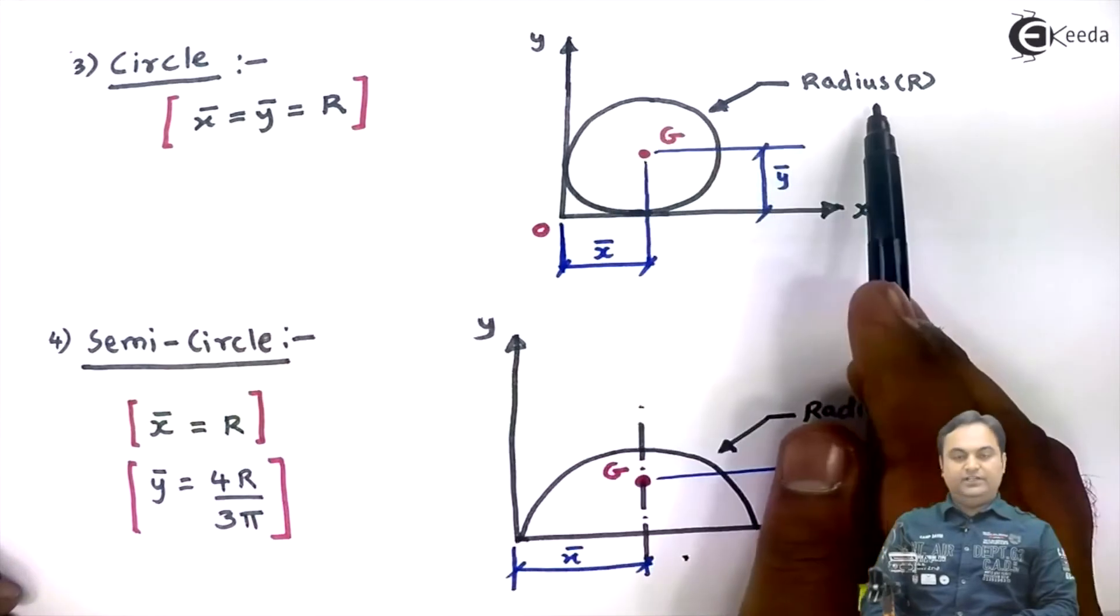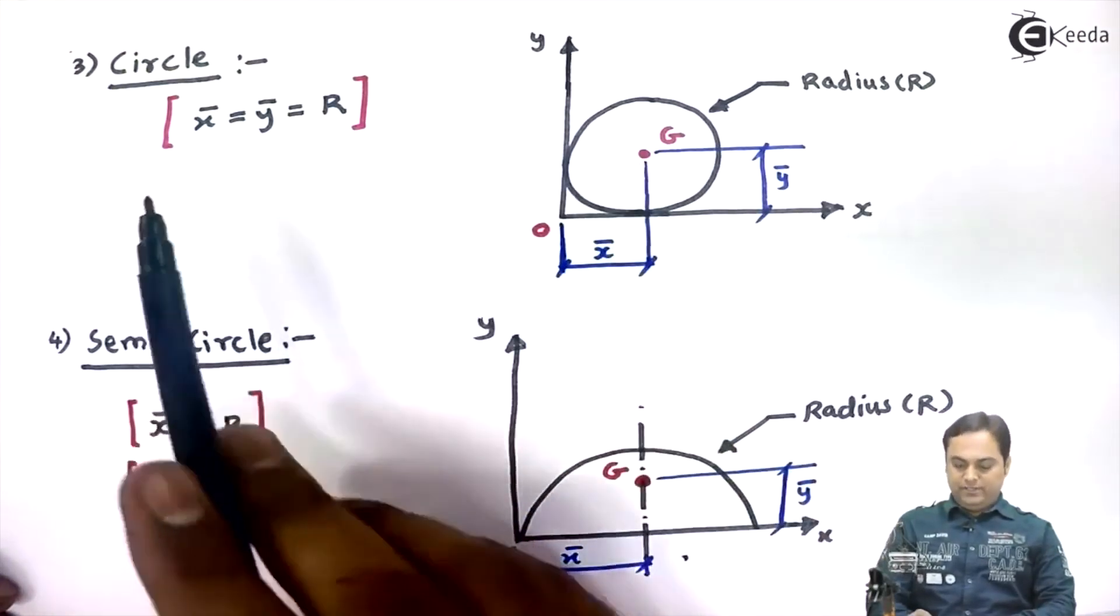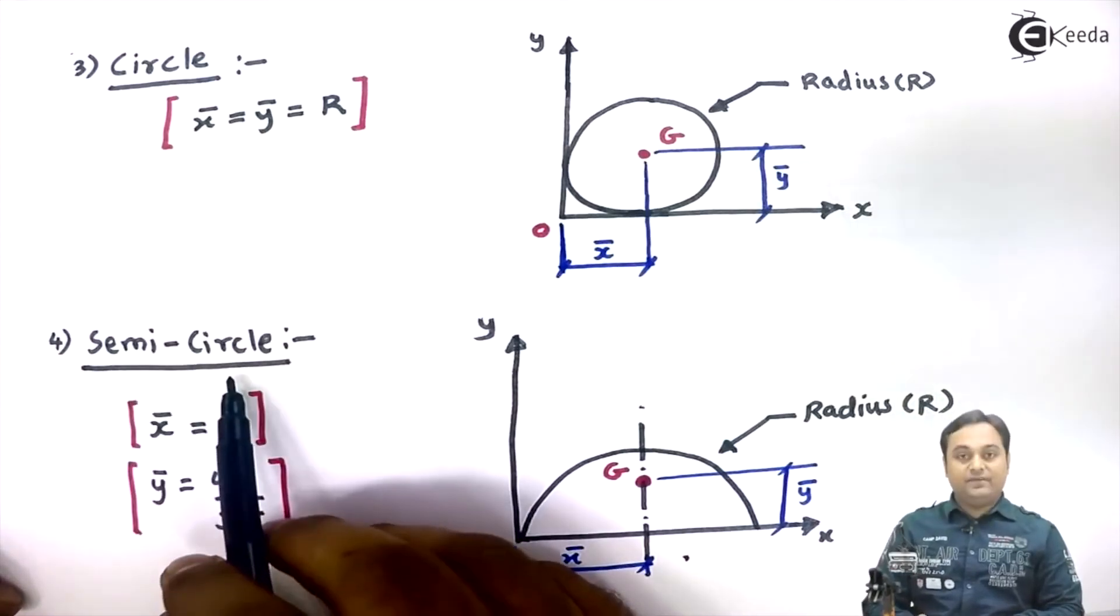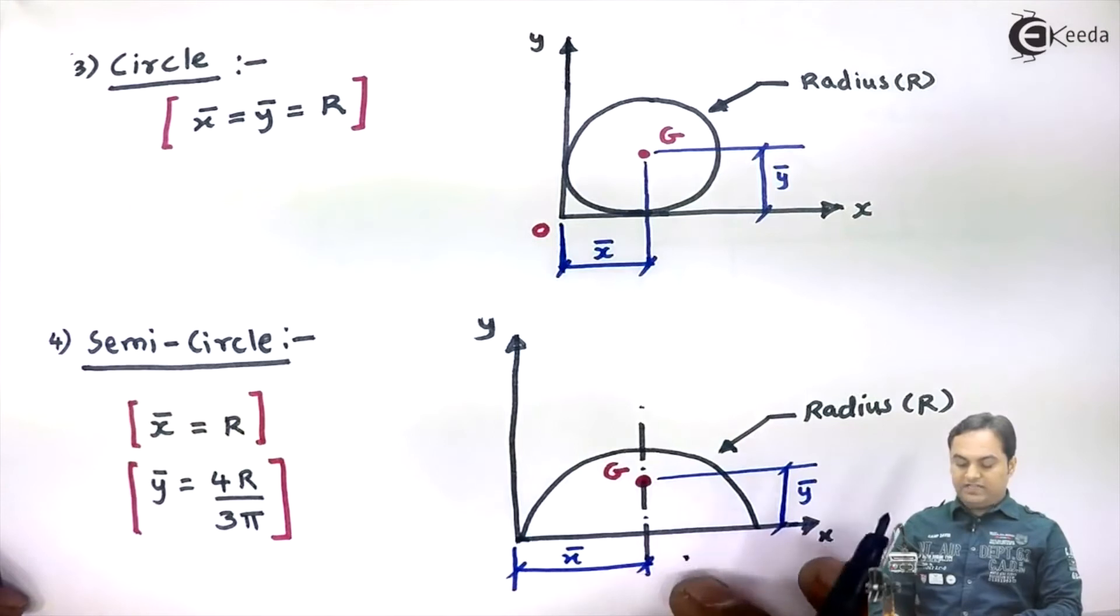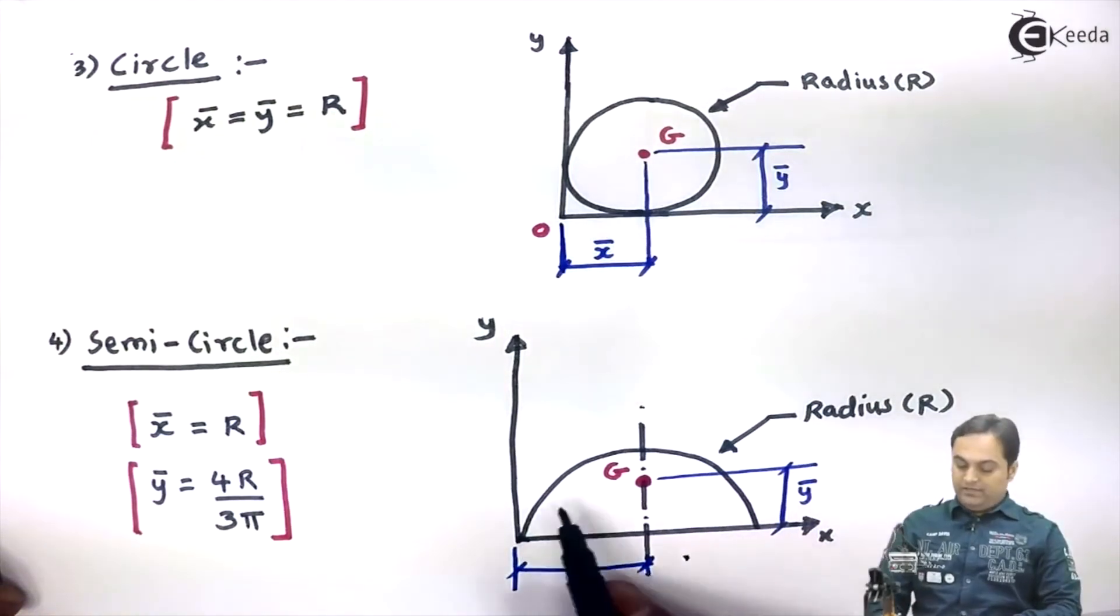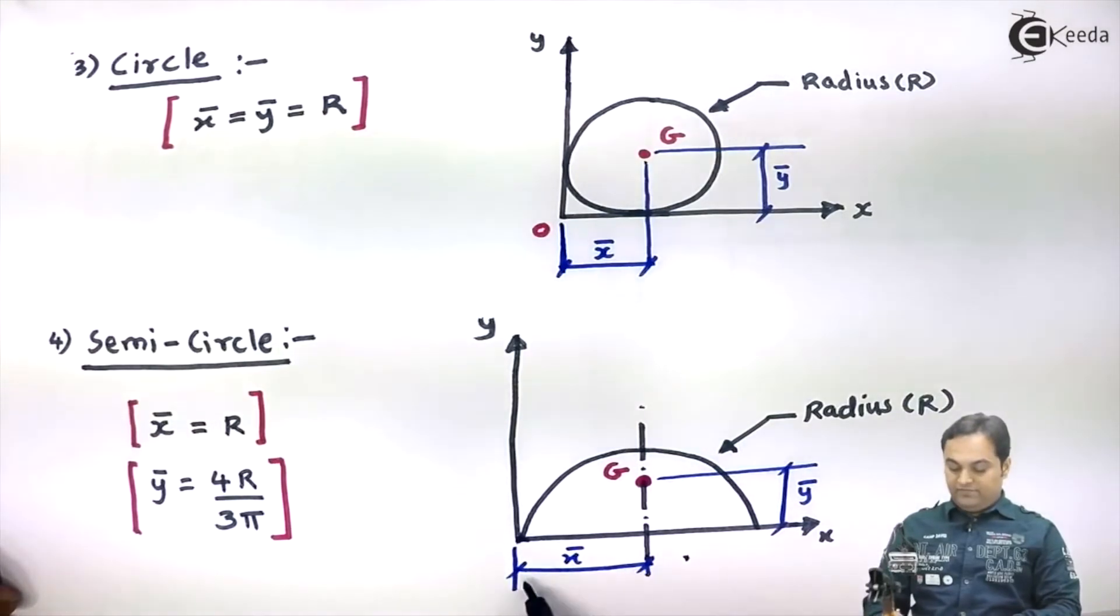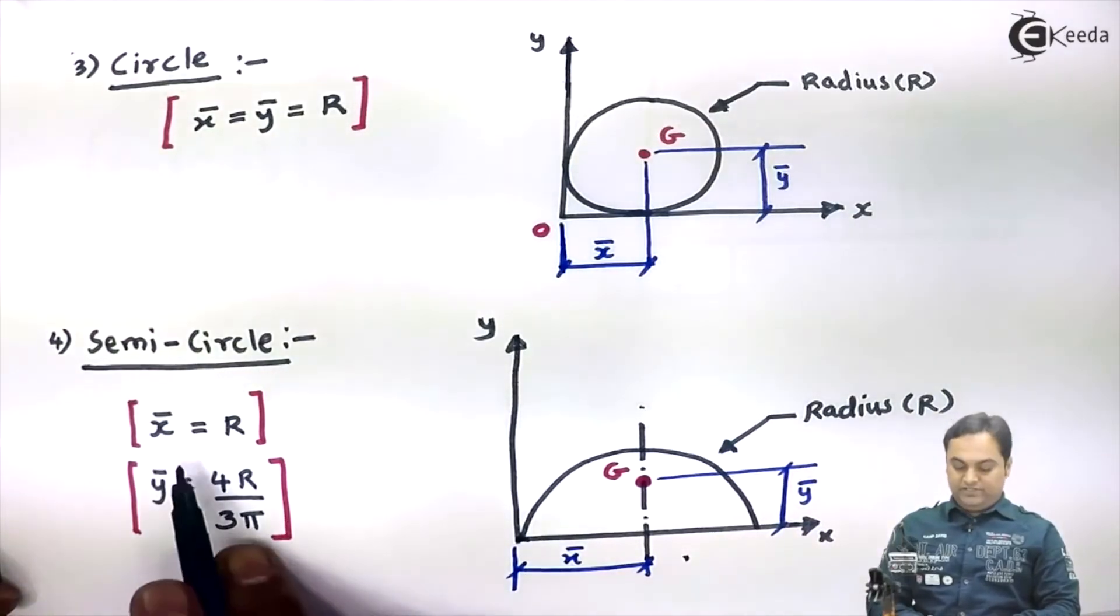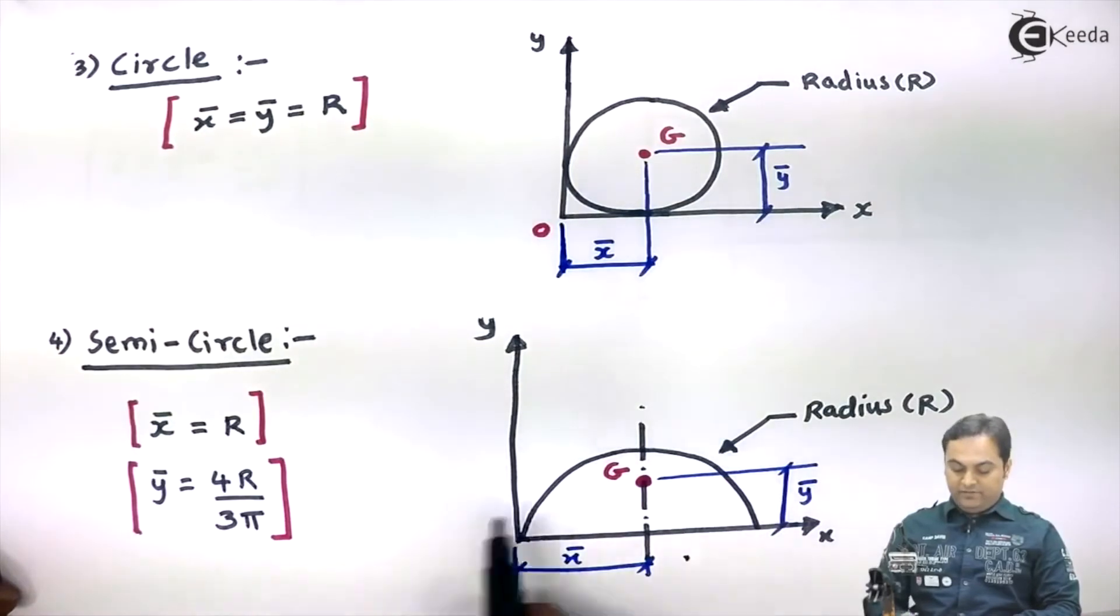They would be equal to the radius of the circle. So this is the location of centroid for the circle. If we have semicircle and it is placed as shown in the figure here, then the centroid would be located by x̄ with respect to y-axis, ȳ with respect to x-axis, where x̄ value is equal to the radius of the semicircle.